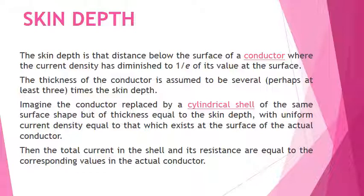Imagine the conductor replaced by a cylindrical shell of the same surface. The thickness is equal to skin depth with uniform current density equal to that which exists at the surface of the actual conductor. The total current in the shell and its resistance are equal to the corresponding values in the actual conductor.